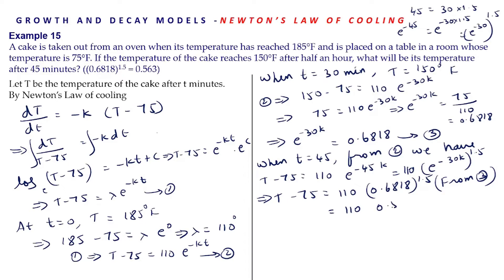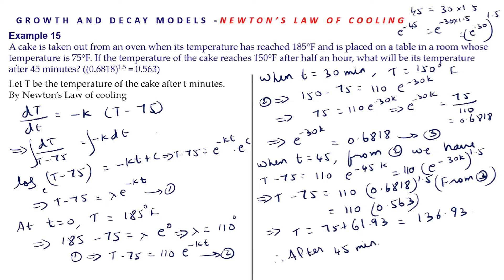So T − 75 = 110 × 0.563 = 61.93, giving T = 75 + 61.93 = 136.93. Therefore after 45 minutes T ≈ 137°F. Finding the final answer carries 1 mark. Up to the general solution carries 2 marks, finding a relation for k carries 1 mark, and the final answer carries 1 mark.